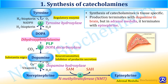Norepinephrine is also called noradrenaline and epinephrine is called adrenaline. The difference between norepinephrine and epinephrine is just the presence or absence of a methyl group. Norepinephrine has no methyl group while epinephrine has a methyl group, which is donated by S-adenosylmethionine. This is how synthesis of catecholamines occurs from tyrosine.